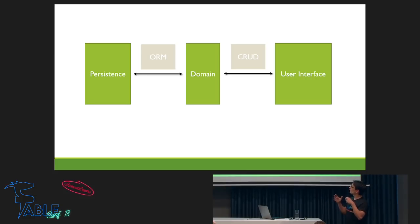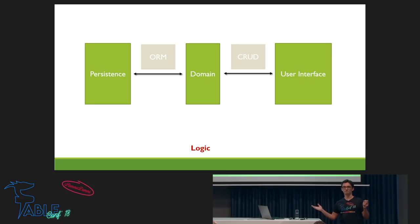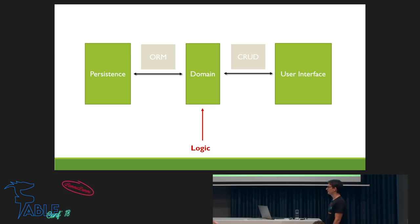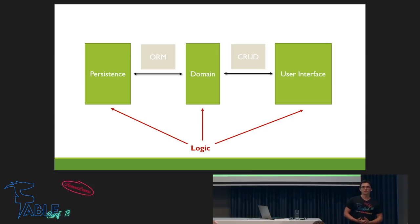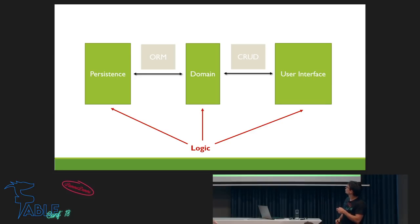The question is: where is the logic in these kinds of applications? In the middle, in the domain — of course. But all applications I've seen in my past also had some kind of logic in the persistence layer — stored procedures, triggers. There is also a lot of logic in the user interface as well, because you put your validation logic in there to avoid a round trip to the server.